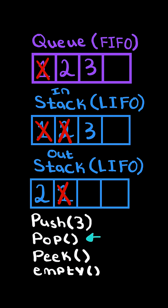Now let's apply a pop. We remove the first element in the queue, and since the out-stack is not empty, we do not move all elements from the in-stack to the out-stack. We simply pop the element from the out-stack.